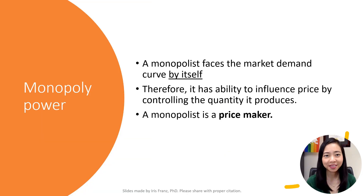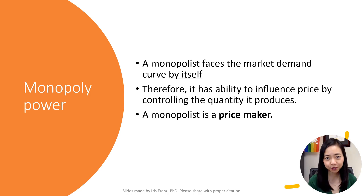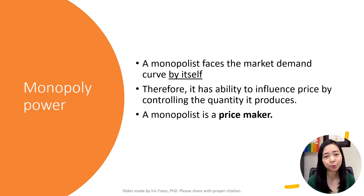Remember that a monopolist is a single seller in the market, so it faces the downward sloping market demand curve by itself. Therefore, a monopolist is a price maker and it can determine both the quantity and the price of the good or service that it sells.